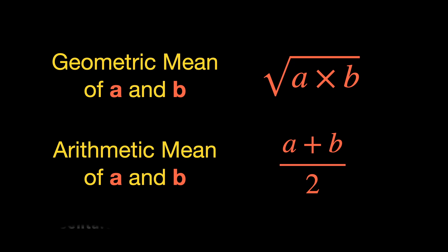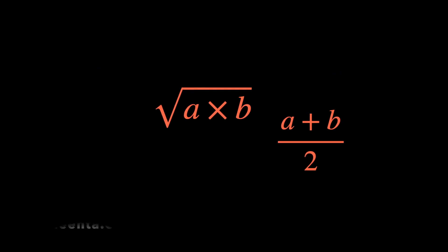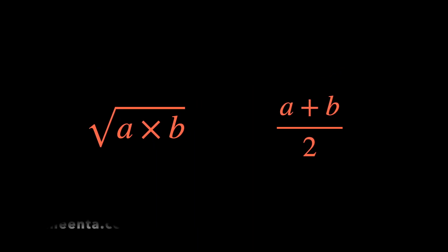The arithmetic mean geometric mean inequality says that we can compare these two quantities. In fact, the geometric mean is always less than or equal to the arithmetic mean.